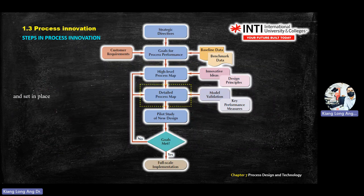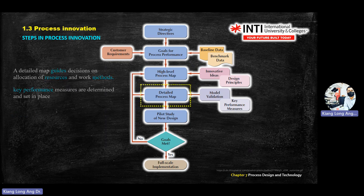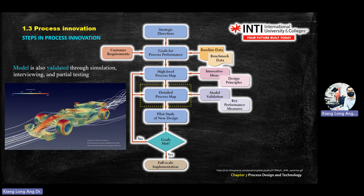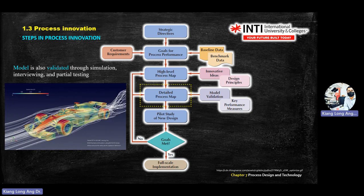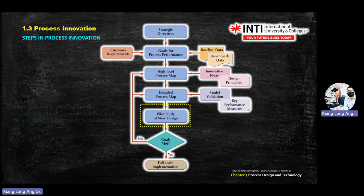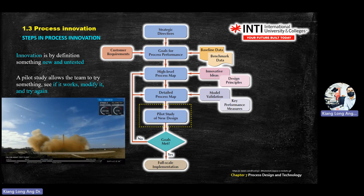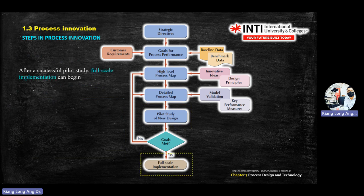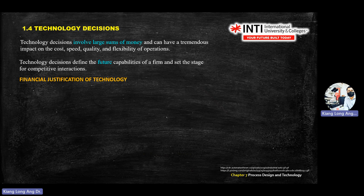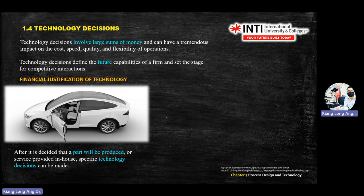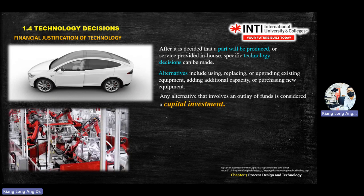Follow through the slides — importantly, understand what the process graph shows. In the detailed process map, you do a lot of simulation and testing. Regarding technology decisions, this section covers financial justification of technology — for example, specific innovation technology used on the production floor, such as electric cars and similar applications.